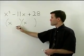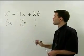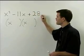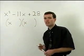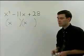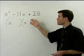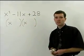To fill the second position in each binomial, you're going to use factors of 28 that add to negative 11. So how do you get factors of a positive number that add to a negative number?